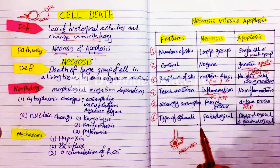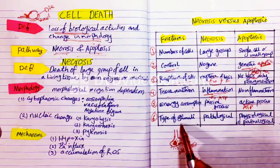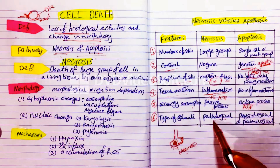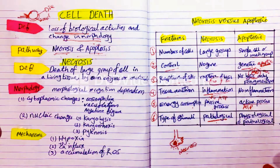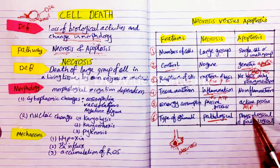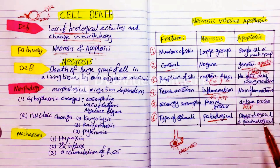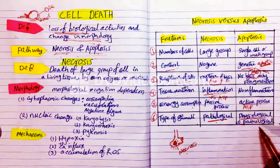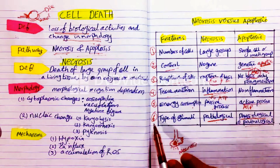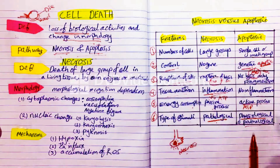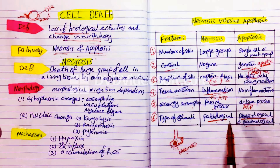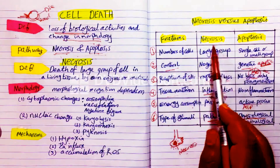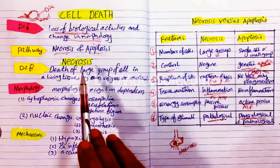The sixth and last differentiating point is the type of stimuli. In necrosis it is a pathological stimuli only. While in apoptosis it can be physiological or pathological stimuli. This is a very important table which differentiates between necrosis and apoptosis, and you have to learn it by heart. Now let us go over necrosis and apoptosis one by one, starting with necrosis.